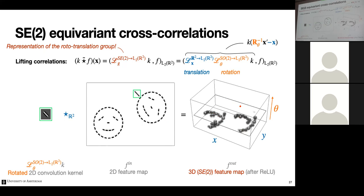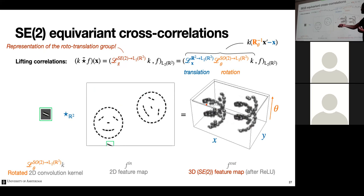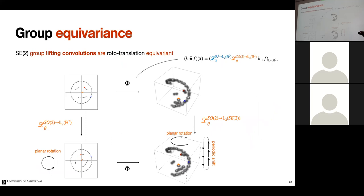The resulting feature map assigns affinity values to the underlying signal for every possible position and orientation — the vertical axis represents rotation. You can see the spiraling structure because the directions of the contour change gradually. An audience member asks about discrete versus continuous rotation. The speaker confirms the underlying group is continuous, but in numerical implementation you discretize — for example, picking 12 rotation angles, which still constitutes a proper discrete group.